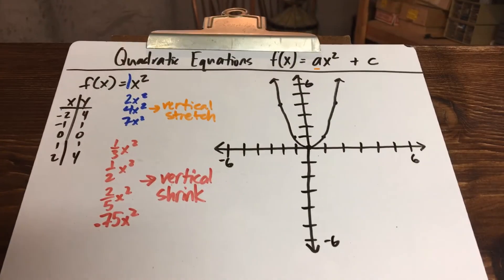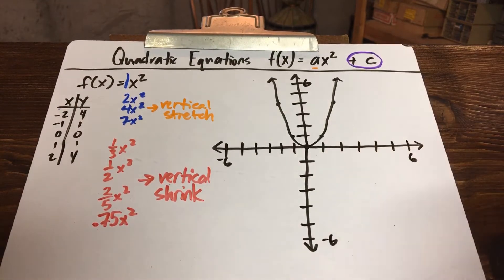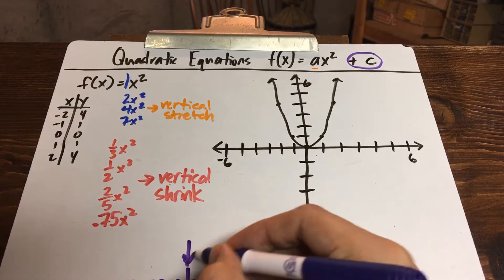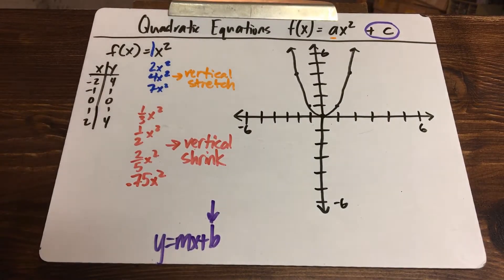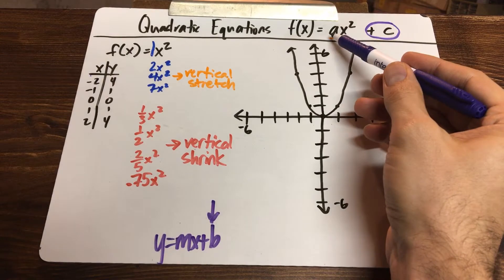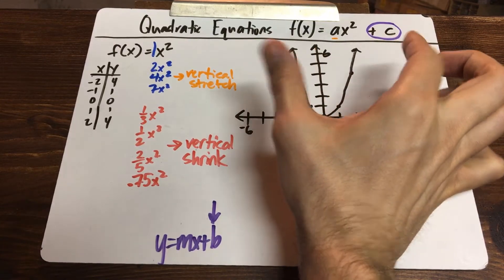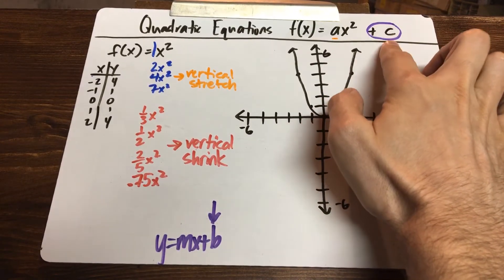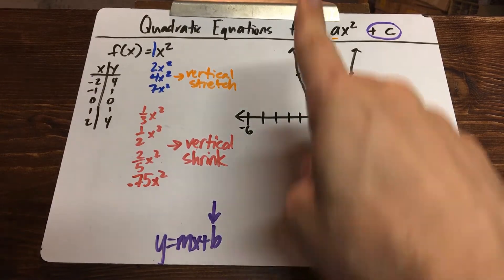Today we're going to focus on the letter c. Just like earlier when you learned to graph mx plus b in seventh grade — that number at the end is always your y-intercept — it's kind of the same thing here. The letter c is going to move the graph up and down on the y-axis. The letter a changes the width; whenever today we add a plus or minus part at the end, that's going to move the entire graph up or down on the y-axis — a translation, a slide.